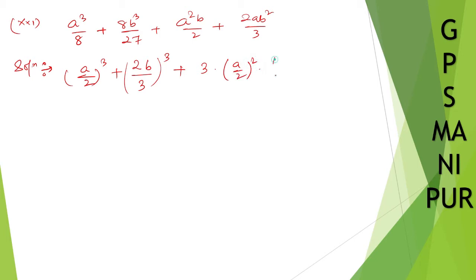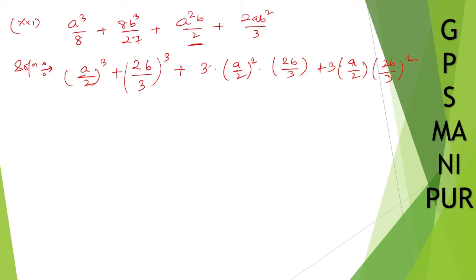Now a squared b is 2b/3. The 3s will cancel, and 2 and 2 also cancel, so you get the simplified term. Plus thrice ab squared: (2b/3) whole squared — one 3 will cancel, another 3 is left out, and 2 and 2 cancel, giving you the result.